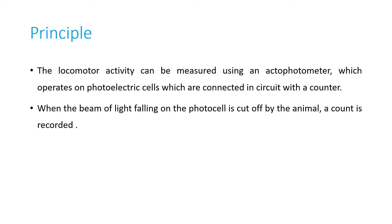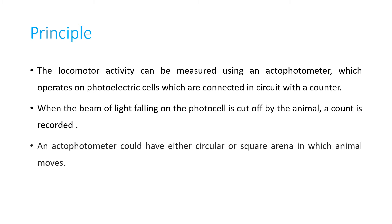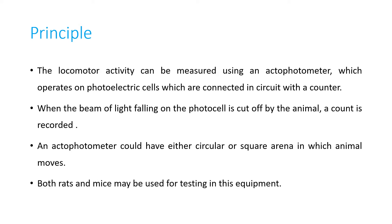When the beam of light falling on the photocell is cut off by the animal, a count is recorded. An actophotometer could have either a circular or a square arena in which the animal moves. Both rats and mice may be used for testing in this equipment.